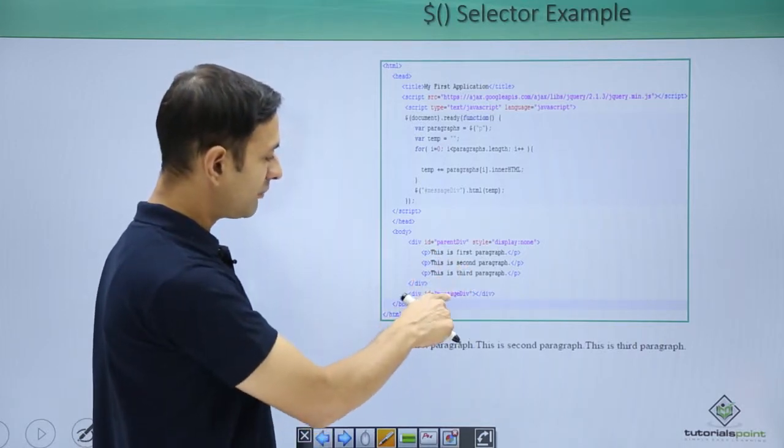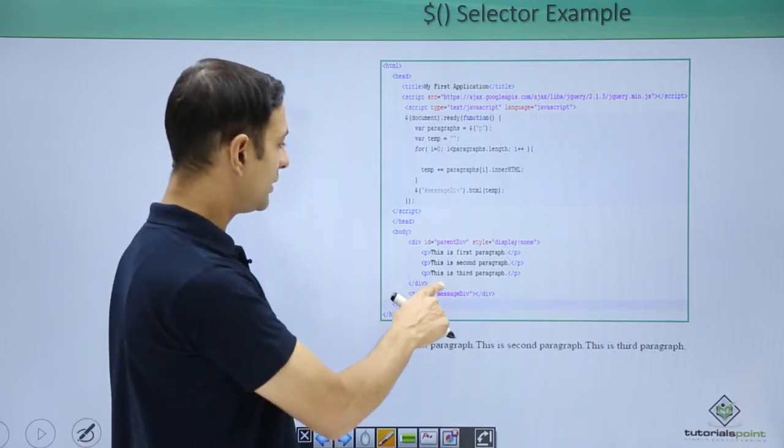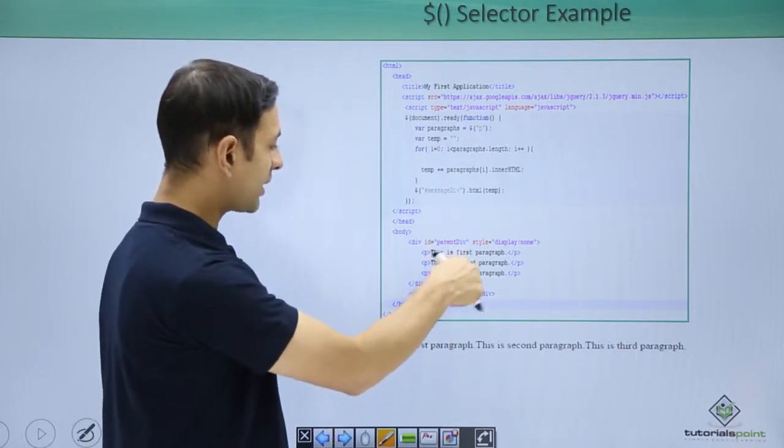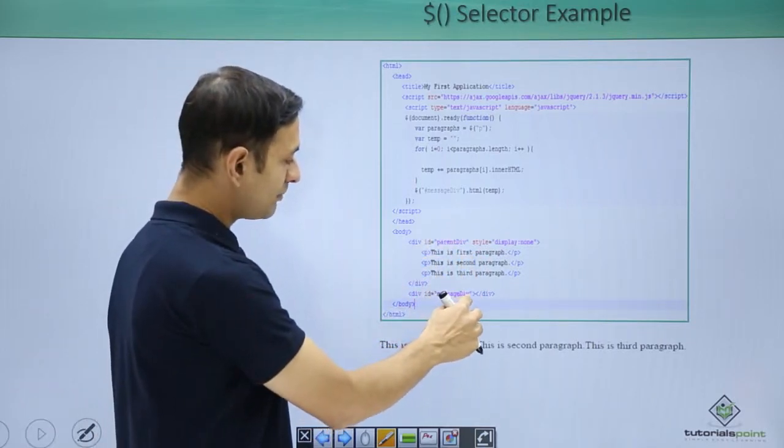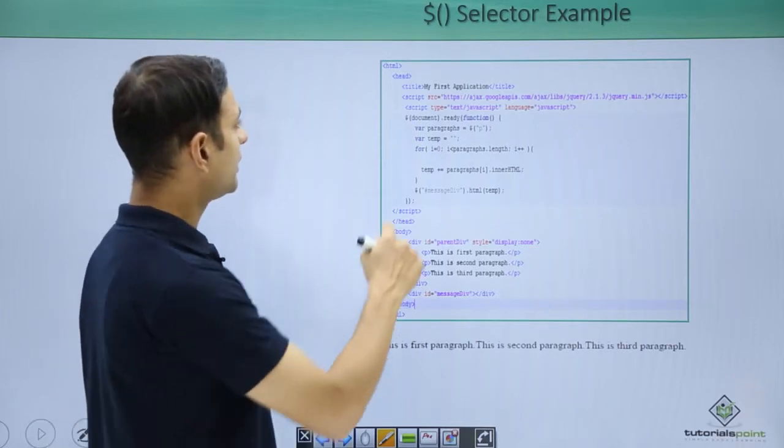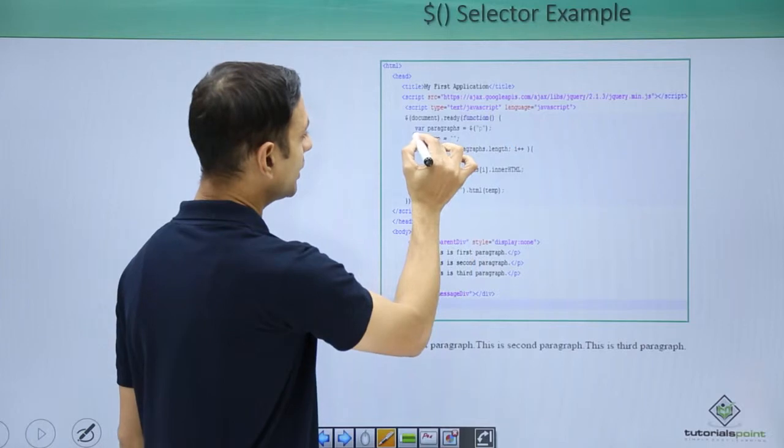In another div, this is message div which is empty. Purpose of this exercise is to print these paragraphs within message div. Let us see how to do it. In our code, what we are doing,